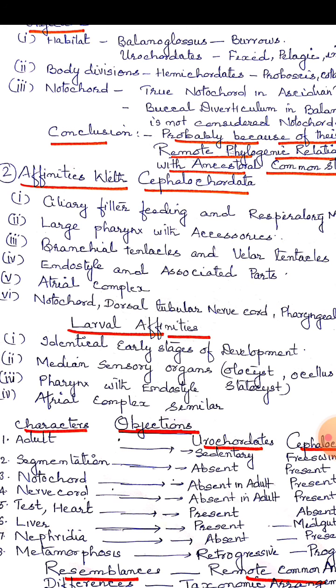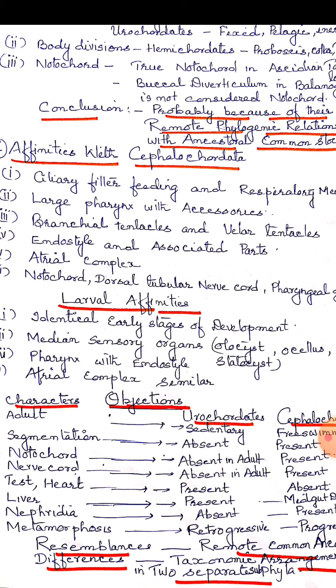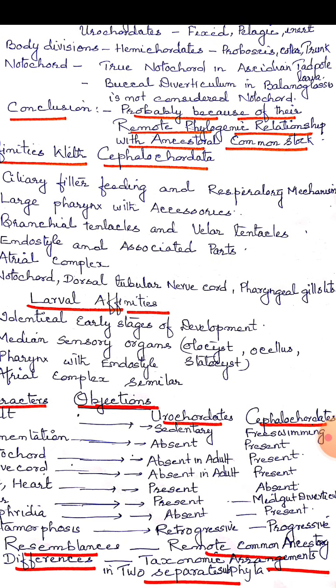Regarding metamorphosis: a particular type of metamorphosis is seen in urochordates, where the ascidian tadpole larva — an active, free-swimming larva — transforms into an inactive, sedentary adult. In cephalochordates, metamorphosis is of a progressive nature. The resemblances point to a probable remote common ancestry, but the differences demand separate taxonomic arrangement as distinct sub-phyla under Chordata.